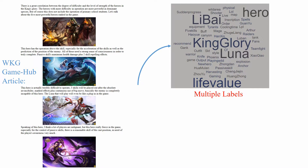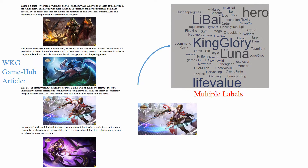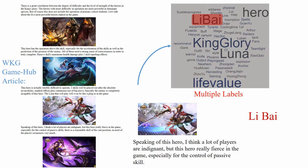The articles belong to multiple categories if observed from different aspects. For example, an article can belong to Li-Bi, A-game heroes from the images, while it can be categorized as hero, passive skill from contents, and so on.